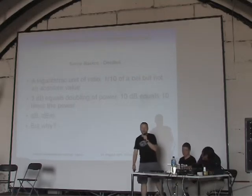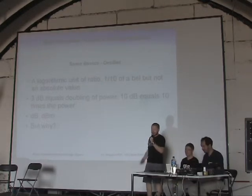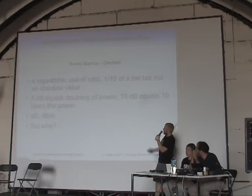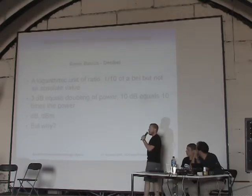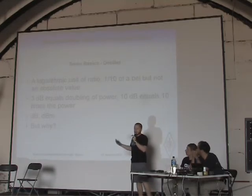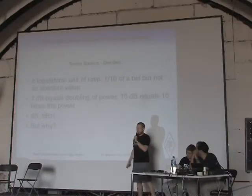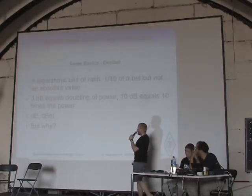There is a second basic we have to know: the decibel. Decibel is a ratio unit — it's nothing fixed, it's a ratio. Just remember: 3 dB means doubling of power, minus 3 means half the power, 10 dB means ten times the power, minus 10 means a tenth of the power, 20 dB would be one hundred times the power. We use it because when you have very large ranges of power, you can just add or subtract them — no multiplication needed. If you want an absolute value, you use dBm — decibels compared to milliwatts. Zero dBm is one milliwatt, 3 dBm is two milliwatts, 10 dBm is ten milliwatts of power.